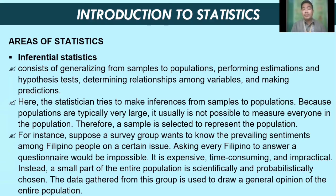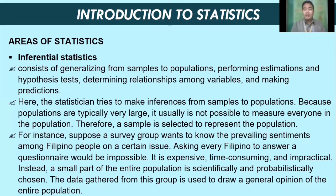Therefore, a sample is selected to represent the population. A sample is taken from the population as a representation of it. For instance, suppose a survey group wants to know the prevailing sentiments among Filipino people on a certain issue. Asking every Filipino to answer a questionnaire would be impossible — it is very expensive, time-consuming, and impractical. Instead, a small part of the entire population is scientifically and probabilistically chosen, and data gathered from this group is used to draw the general opinion of the entire population.